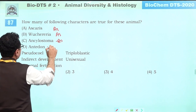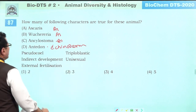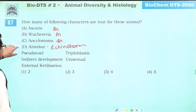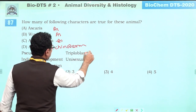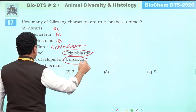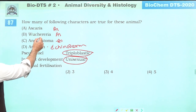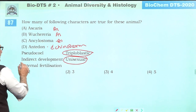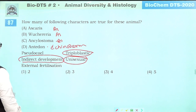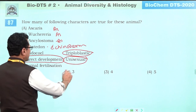Echinoderms: pseudocoelom is absent — they have true coelom. All are triploblastic. Sexes are separate in all. There is indirect development with larvae. External fertilization in Aschelminthes, but echinoderms have external fertilization. So answer is three: external fertilization with indirect development.